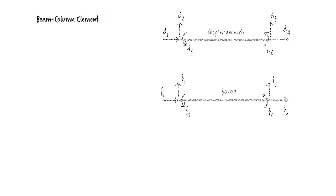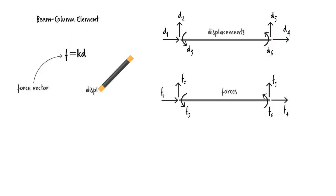Our beam column element has six degrees of freedom and six member end forces. Without any loads applied to the member, the member equations can be expressed as F equals K times D, where F is the force vector, D is the displacement vector, and K is the member stiffness matrix.